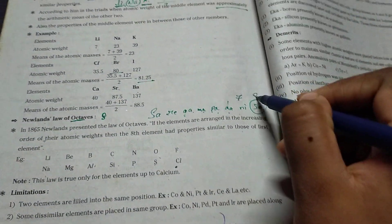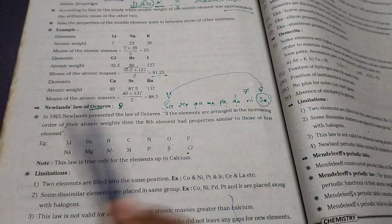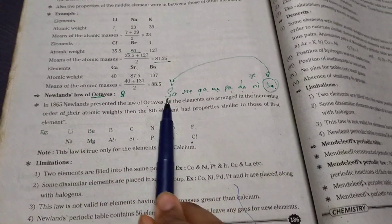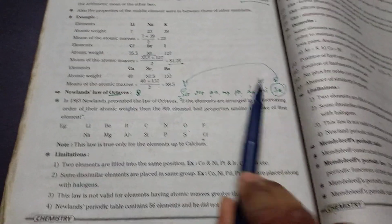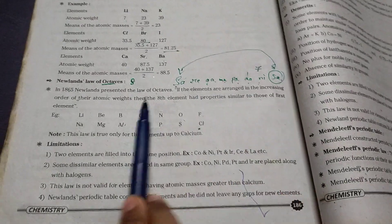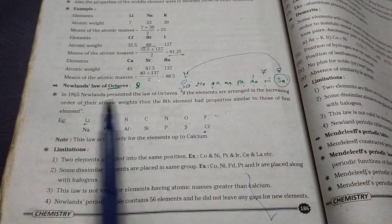They have seven notes here. The eighth note again starts from here. It means seven, and again, it's coming to the same properties, like that. He followed this, and he told that every eighth element gets the same properties of the first.